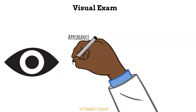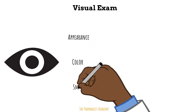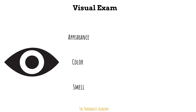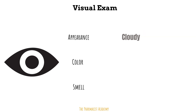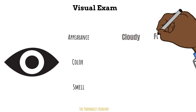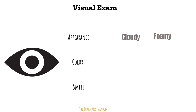For the visual examination you want to assess the appearance, color, and smell of the urine. An abnormal observation is a cloudy urine, which can be due to an elevated white blood cell count due to an infection — think of how clouds are white, so white blood cells. Sometimes cloudy urine can also be attributed to dehydration or kidney stones. Your urine becomes foamy when there is a lot of protein in it, and this could be a sign of renal damage.